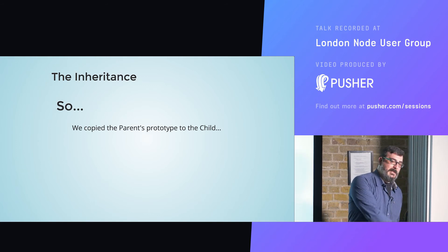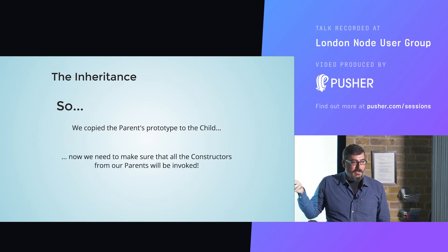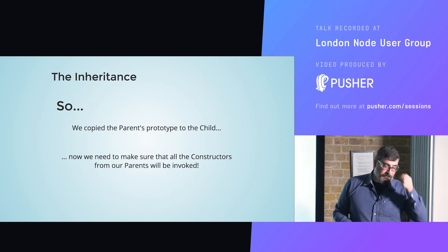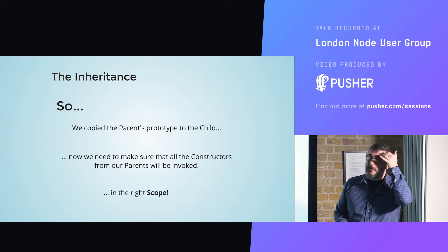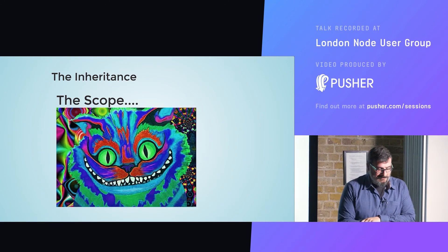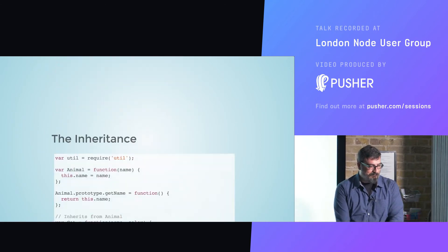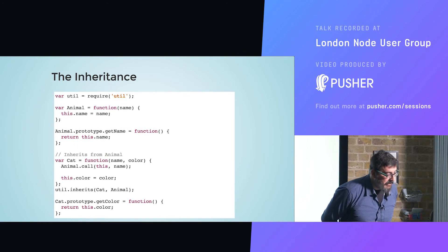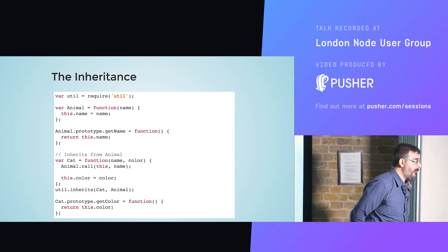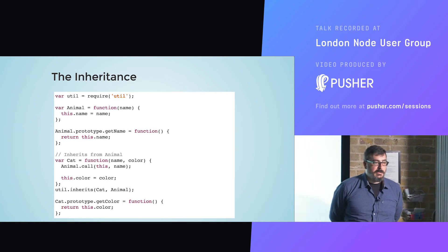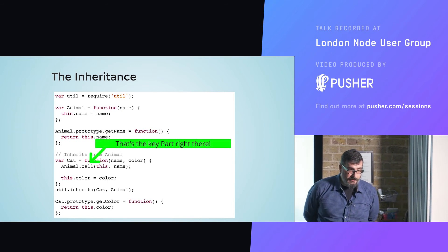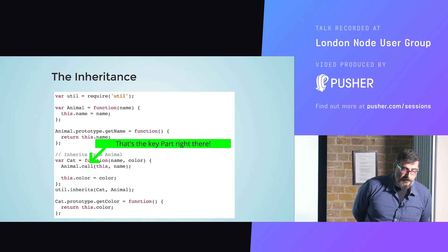We copied the parent's prototype to the child. Now we need to make sure that all the constructors from our parents will be invoked in the right scope, and this is where things get a little crazy. Let's talk about scope. This is an example of inheritance in ECMAScript 5 — I'm using ECMAScript 5 to better illustrate what's going on. As you can see, there is a line performing a .call().